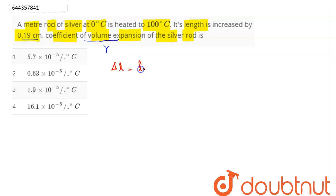Change in length is equal to l₀αΔθ. Hence, α (coefficient of linear expansion) can be written as Δl divided by l₀ times Δθ. Now, we have Δl given in the question as 0.19 centimeter, so this is 0.19 divided by l₀. Here, it's given as meter rod, means 100